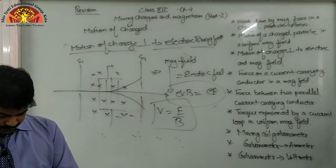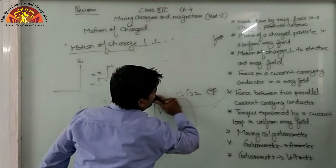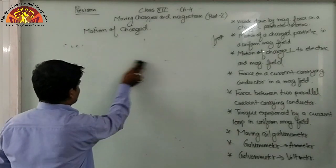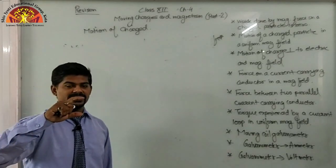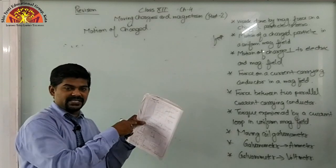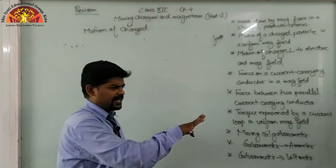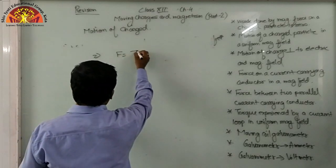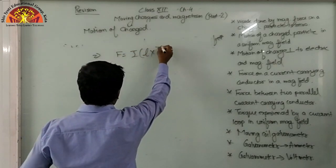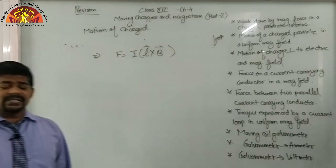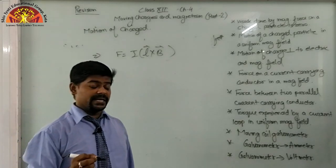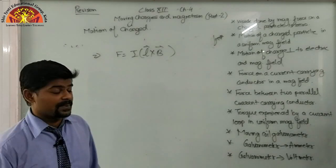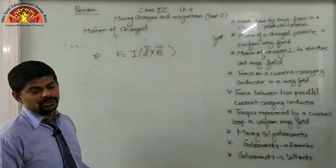The next topic is force on a current-carrying conductor in a magnetic field. You may remember from Class 10 the horseshoe magnet experiment, where a conductor placed near a horseshoe magnet deflected when current flowed. The formula is F = IL × B. A current-carrying conductor of length L carrying current I in magnetic field B experiences this force.